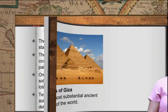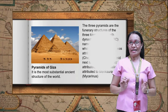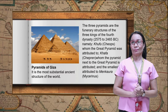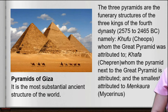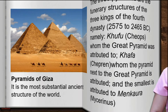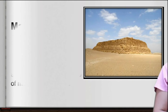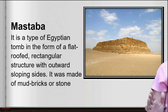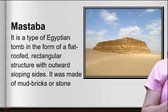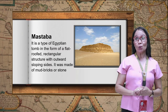The Pyramids of Giza are the most substantial ancient structures in the world. The three pyramids are the funerary structures of three kings of the 4th dynasty — Khufu, Khafra, and Menkaure. The Mastaba is a type of Egyptian tomb in the form of a flat, rectangular structure with outward-sloping sides, made of mud bricks or stone.